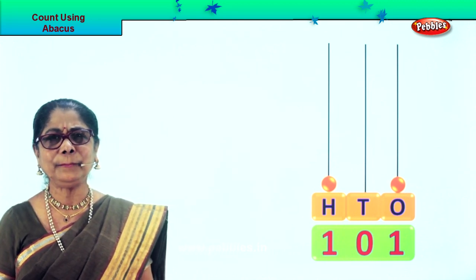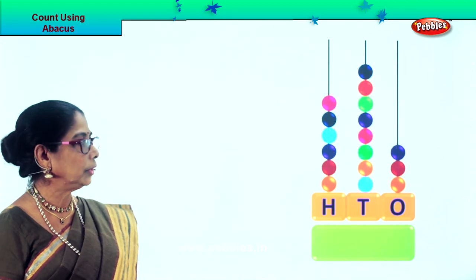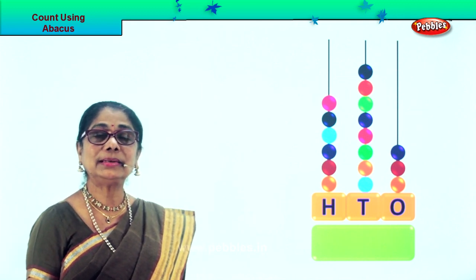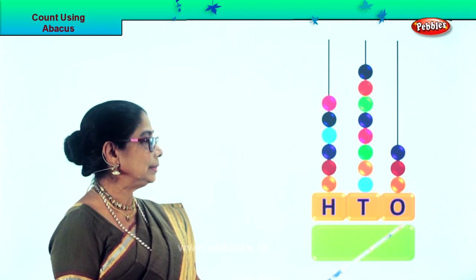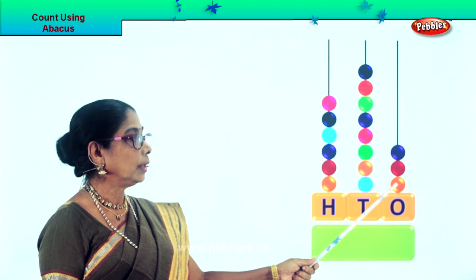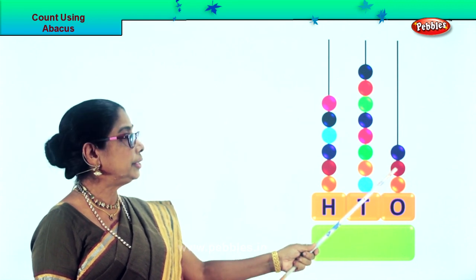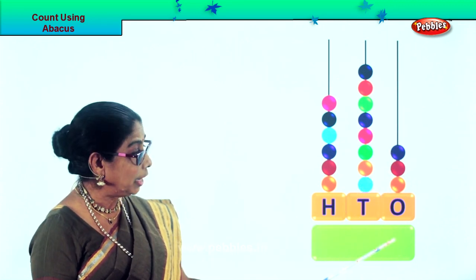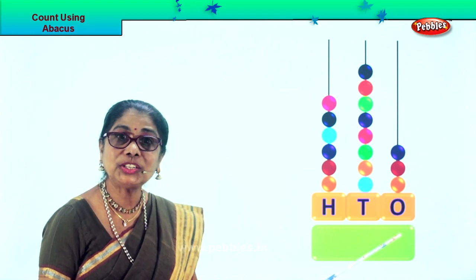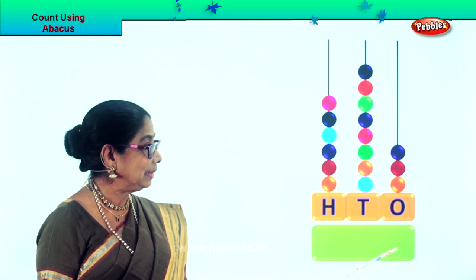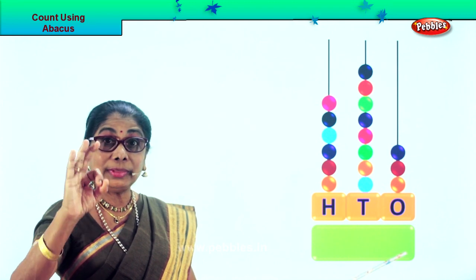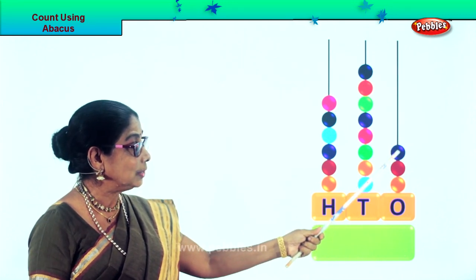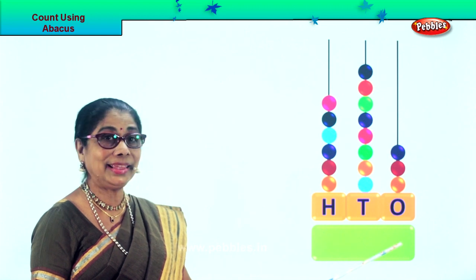Let's take another sum. Let's count the beats in the 1s place: 1, 2, 3. So we put down number 3 in the 1s place because there are 3 single beats: 1, 2, 3.